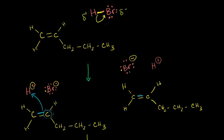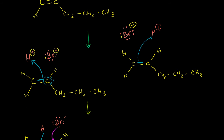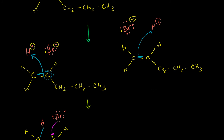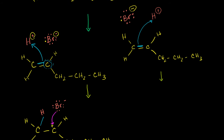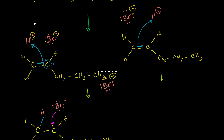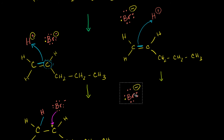So this pi bond right here — the left carbon will lose its electron and it will go to the hydrogen. We're doing the opposite of what happened before. If we go down that path, we now have our bromine hanging out here, and we ask what does this molecule look like now?